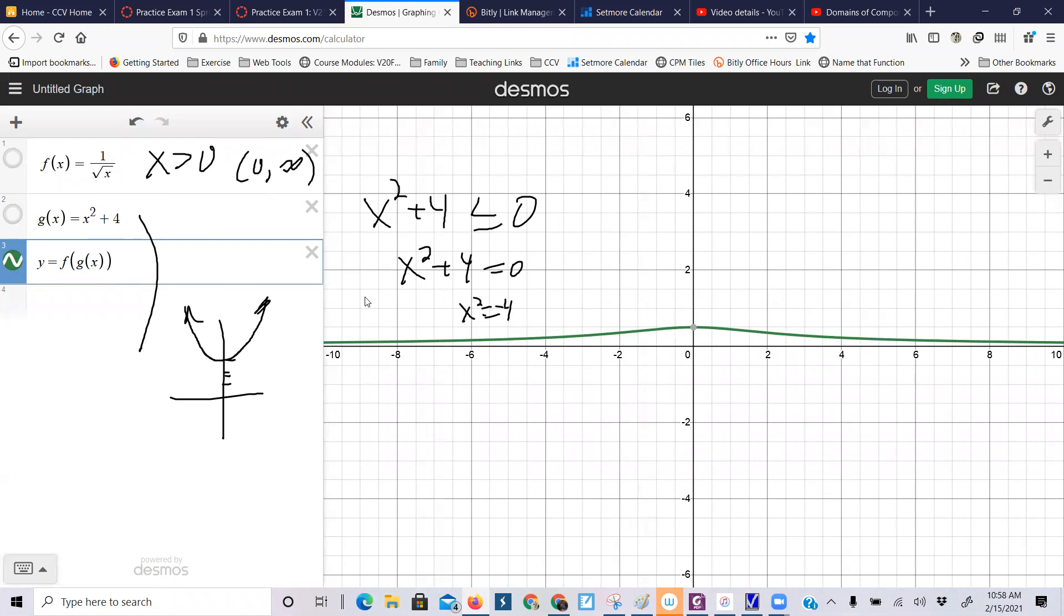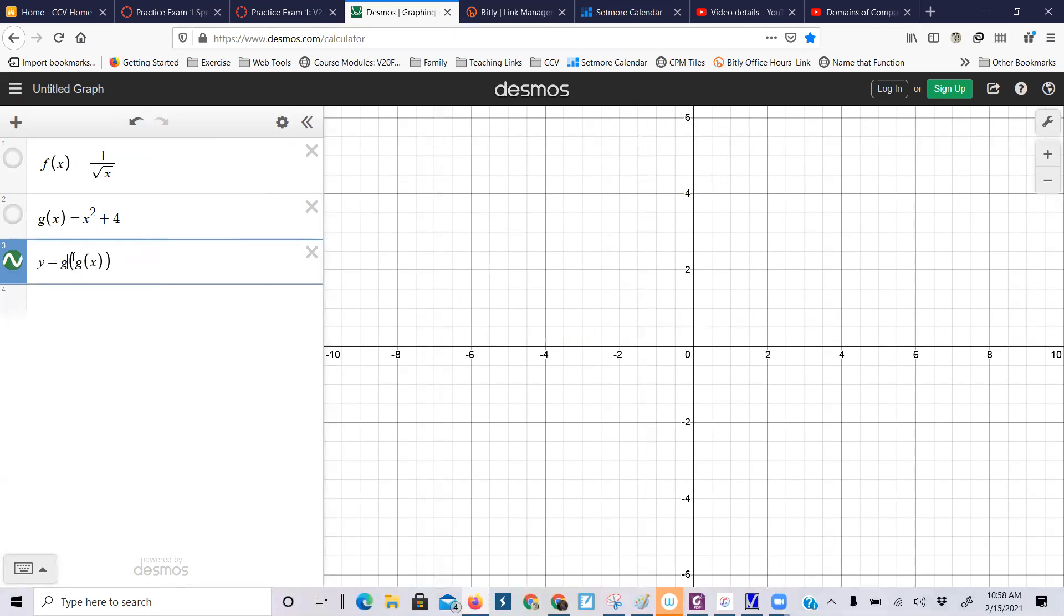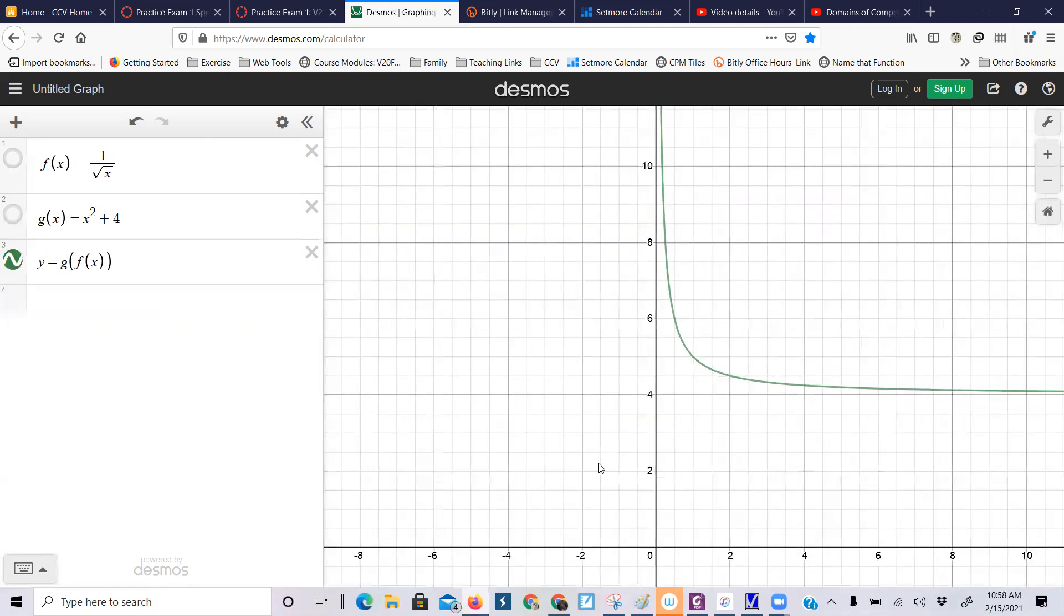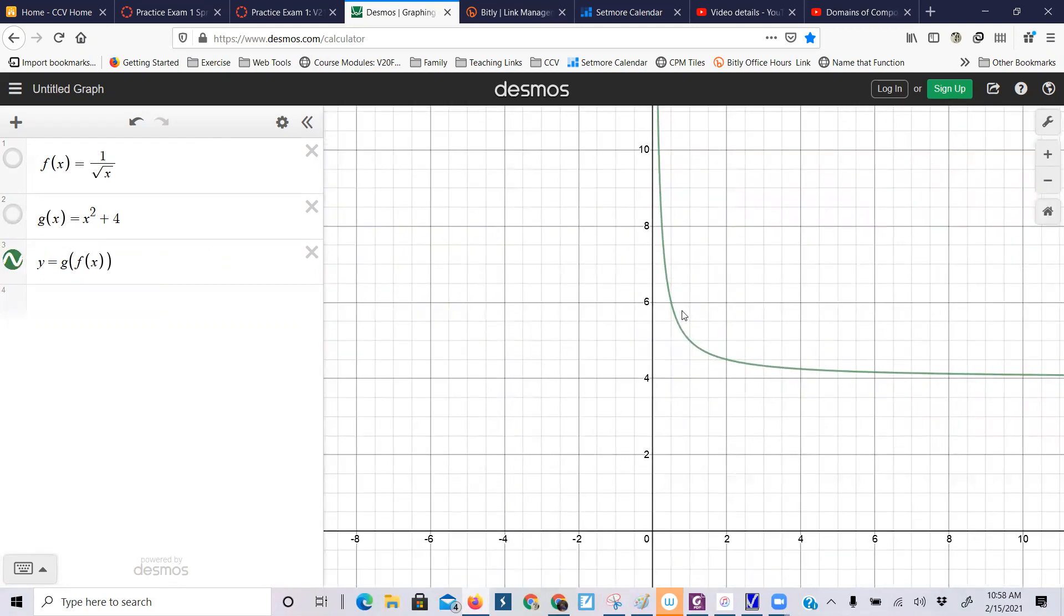Well, what if I switch this up a little bit, what if I clear this writing out, switch this up and say, now let's graph g of f of x. Now it's switching that, and you see what's happening here, I'm getting a vertical asymptote, and you see how that original domain limitation, that x has to be bigger than zero, is still in place.